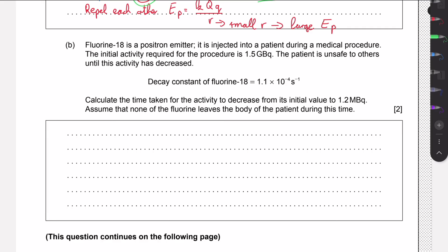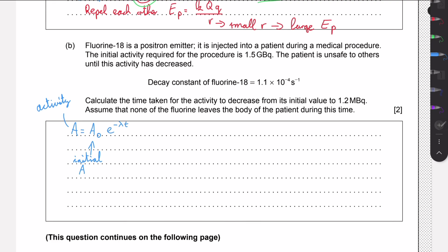Part b is a simple calculation we need to do. If we look in the data booklet, we will see that there is this equation that relates the activity after some time t. This is the activity now, so activity after some time. This is the initial activity. E is just Euler's number, and this lambda is called the decay constant. This is also given to us in the question. And t is just the time.